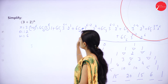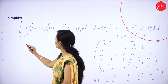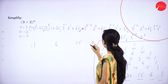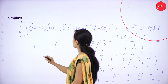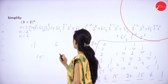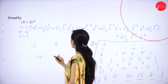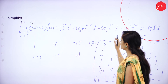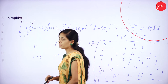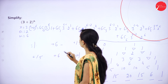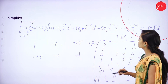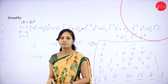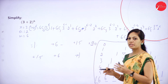Now we have 7 terms. You can substitute the values: 6c0 is 1, 6c1 is 6, 6c2 is 15, 6c3 is 20, 6c4 is 15, 6c5 is 6, and 6c6 is 1. Now you can simplify the expression — find the value of 3 power 6, 3 power 5, 3 power 4, 3 power 3, 3 power 2, and 3 power 1. You can easily find the exponential values. This is your assignment question — please practice this.